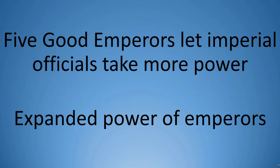Imperial officials under the five good emperors continued to take over government functions, and the power of the emperor expanded into new areas. For example, Trajan created a program to aid poor Romans in educating their children. The success Rome was having during the first two centuries, a time known as the Pax Romana or Roman Peace, could not have happened without economic growth.